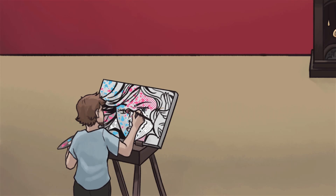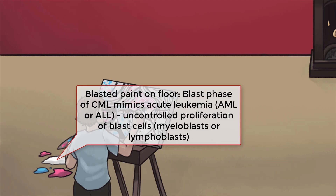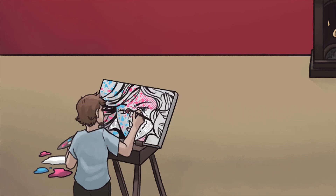As a result, the basophil, neutrophil, and eosinophil dots are more splotchy and less differentiated. And finally, the blast phase resembles acute leukemia and is characterized by an uncontrolled proliferation of myeloid or lymphoid blasts, symbolized here by these amateurish crude splotches of paint — just immature, to say the least.